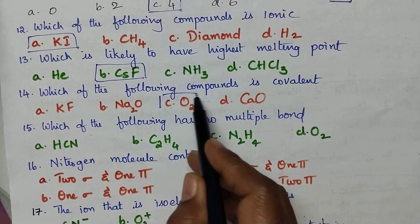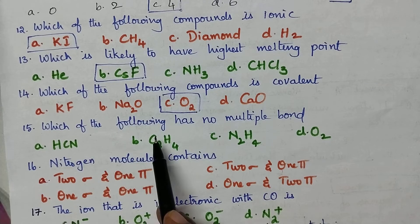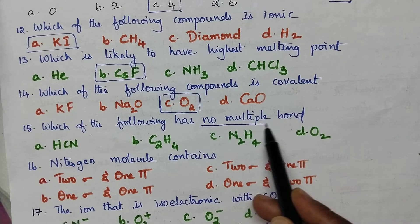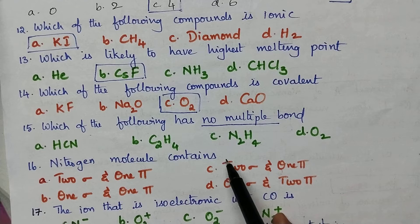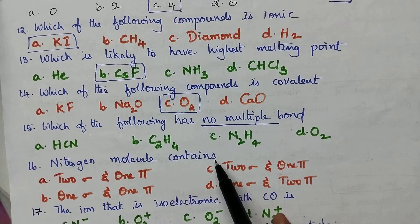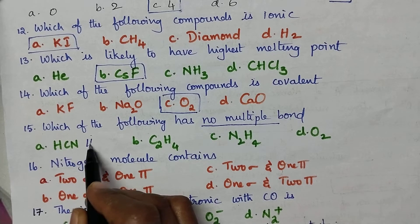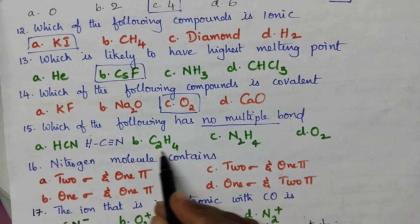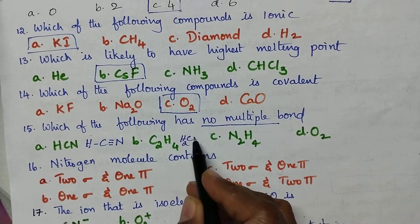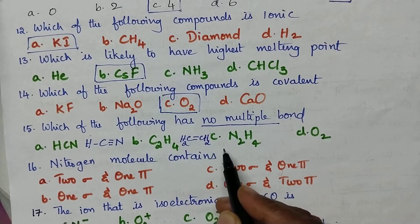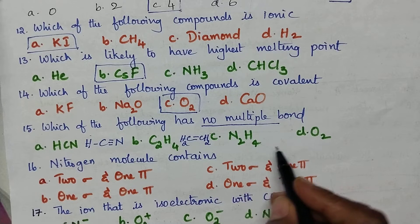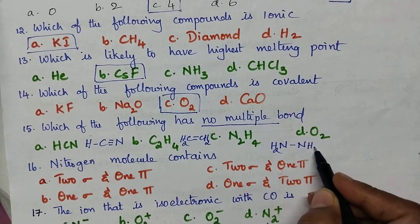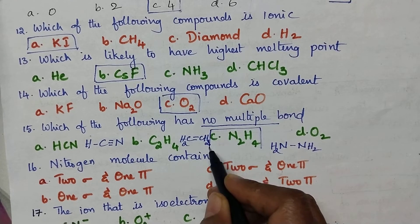Which of the following compound is covalent? Oxygen is a good example of a covalent compound. Which of the following has no multiple bonds? To identify which compound has no multiple bonds, we consider structural formulas. In HCN, a triple bond is present between carbon and nitrogen. Option B is ethylene, which has a double bond between two carbon atoms. Option C is hydrazine, which contains only single bonds — so option C is the right answer.